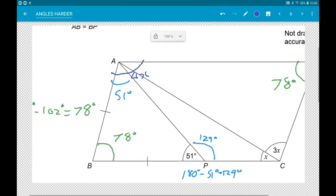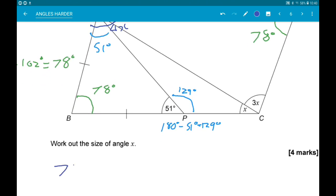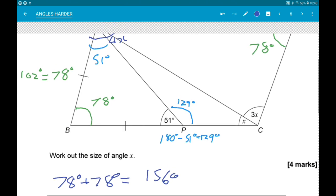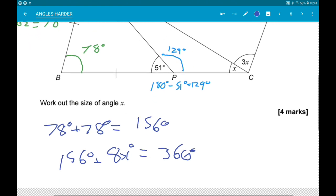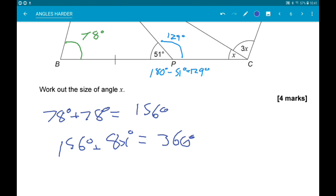Now if we do 78 and 78, we get 156 degrees. So the bottom left and top right angles, if we add those to the other two angles, we get 156 and 8x is equal to 360 degrees. Now if we take away 156 degrees, we get 8x is equal to 204 degrees.